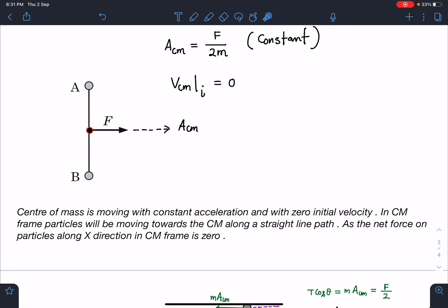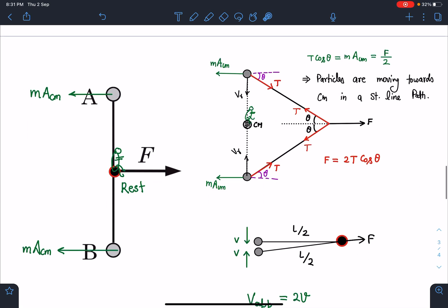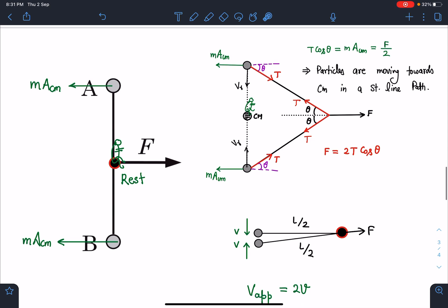Here I'm just showing some instance. This is the initial moment. So in center of mass frame, I have to apply pseudo force on each mass, m into a_cm. By the way, this value will come as F by 2. All right. So here we can see now at any time t, the situation is somewhat like this.